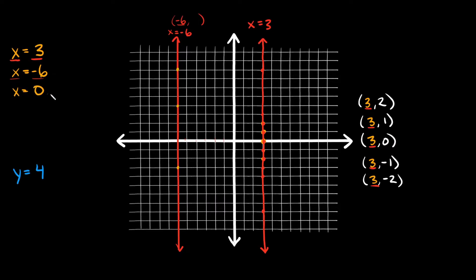What if you had x is equal to 0? Where are all of your x-coordinates equal to 0? Well, your x is equal to 0 right here on the y-axis — right here, everywhere, all along the y-axis. It's literally on top of the y-axis. So x is equal to 0 would be the exact same line as your y-axis.